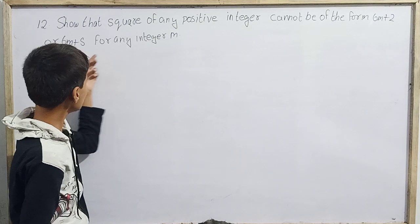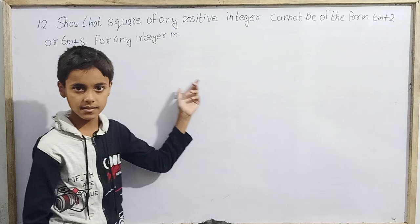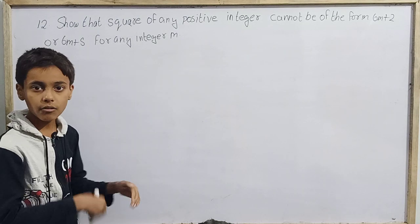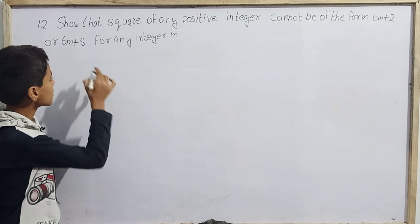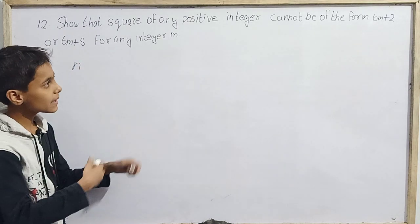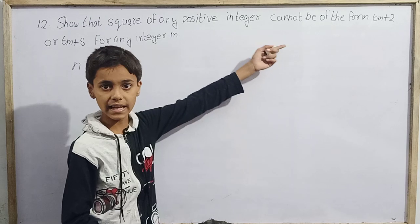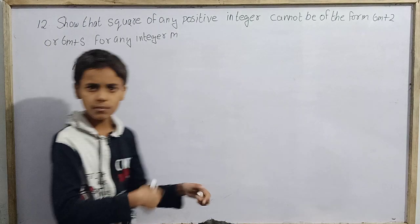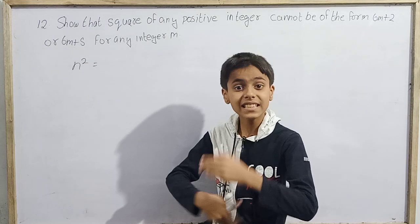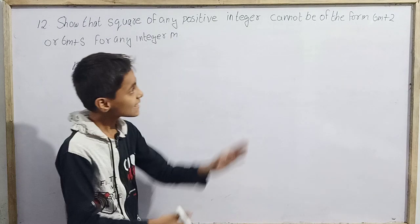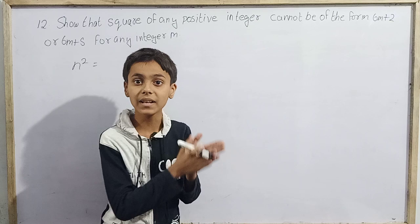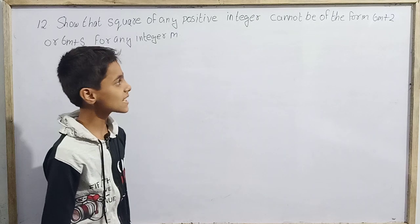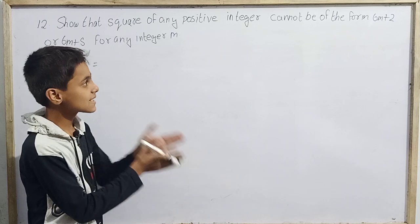This question asks us to show that the square of any positive integer cannot be of the form 6m plus 2 or 6m plus 5 for any integer m. So we have to prove that 6m plus 2 and 6m plus 5 cannot be forms of any perfect square.